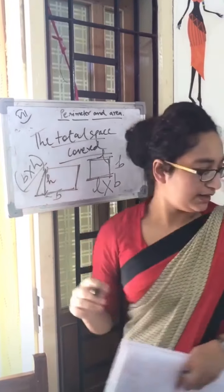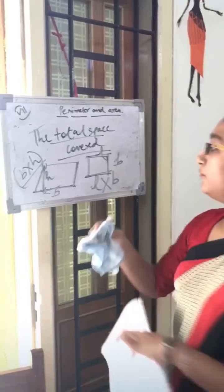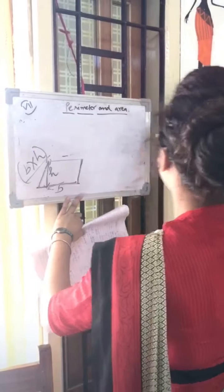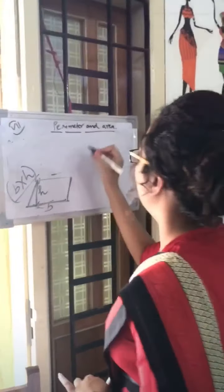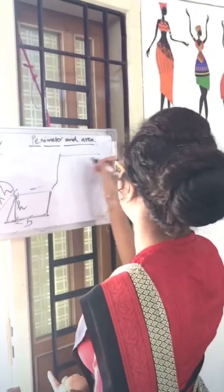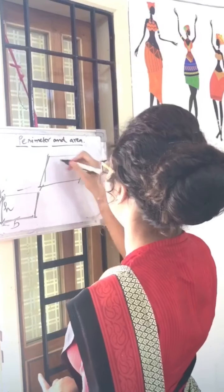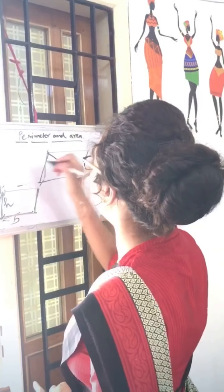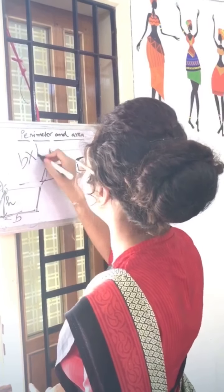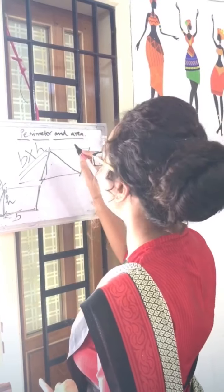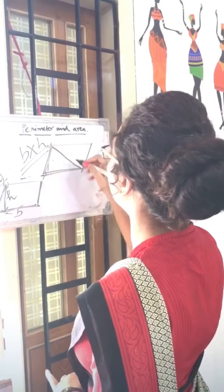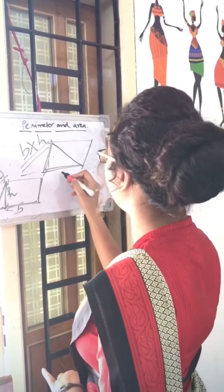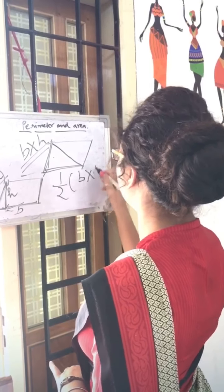In the same manner, for a triangle — if we are to find the area of a triangle, notice one thing: when we divide a parallelogram into two parts, it gives us a triangle. So if the area of a parallelogram is base × height, then of course the area of a triangle will be ½ × base × height.